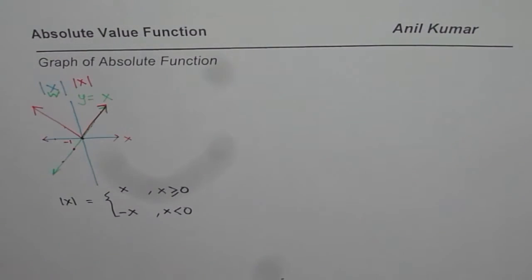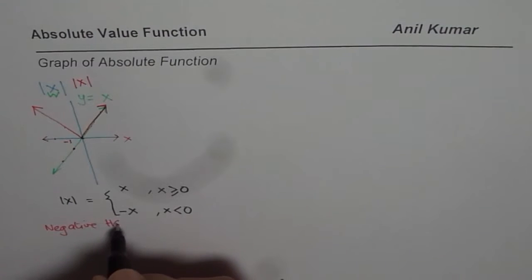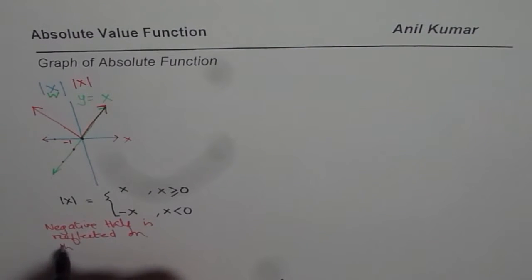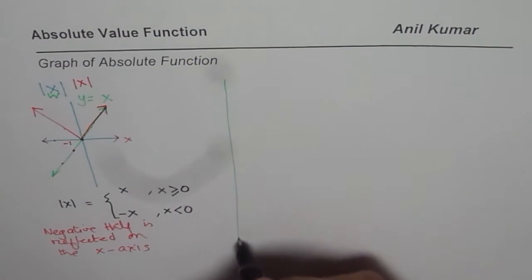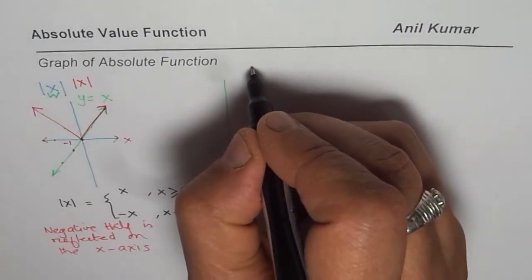So the negative half is reflected on the X-axis. That is the strategy we are going to use to sketch any absolute function. I hope that gives you an idea. Now we will take two more examples.